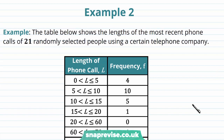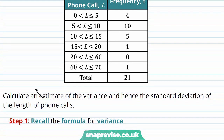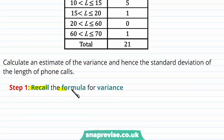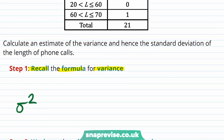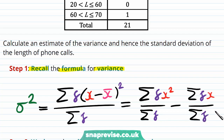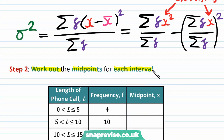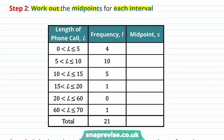Our second example shows a table of lengths of the most recent phone calls of 21 randomly selected people. We are asked to calculate an estimate of the variance and hence standard deviation. The formula for variance is sigma squared equals the sum of F(X minus X-bar) squared divided by sum of F, which expands to sum of Fx squared over sum of F, minus (sum of Fx over sum of F) squared. For grouped data we use midpoints: 2.5, 7.5, 12.5, 17.5, 40, and 65, with a total of 21.